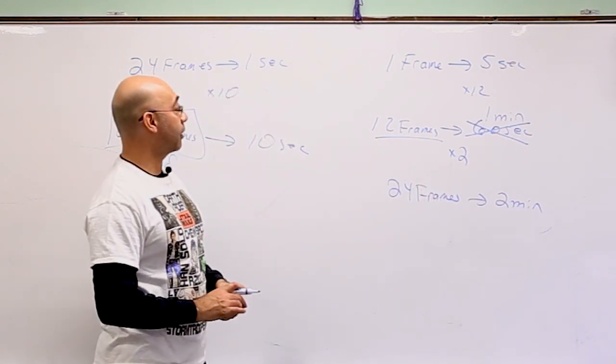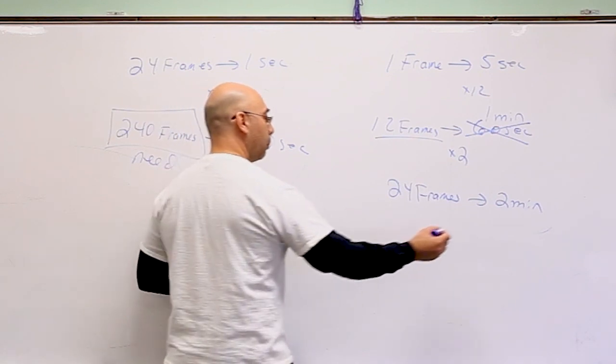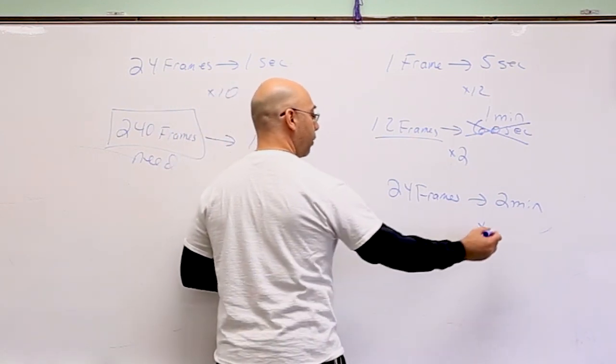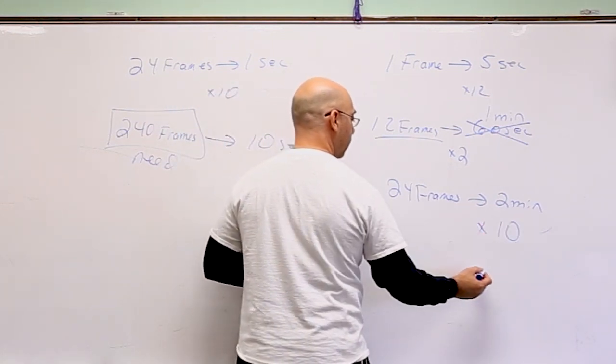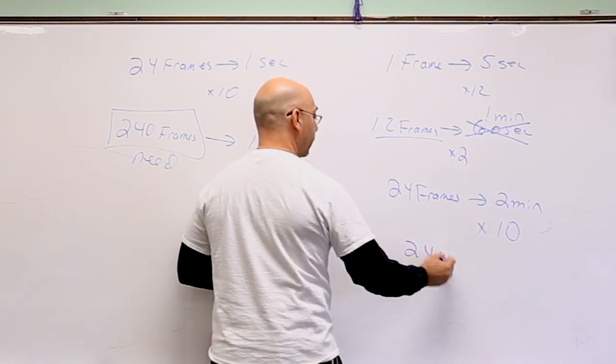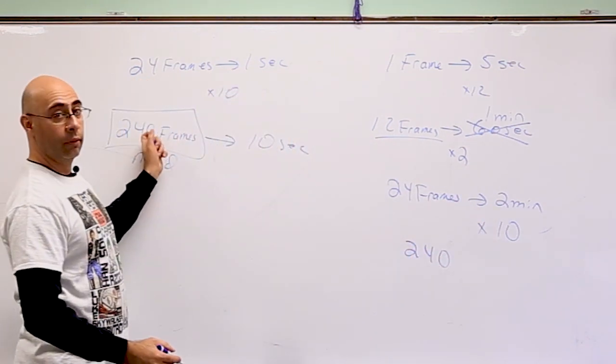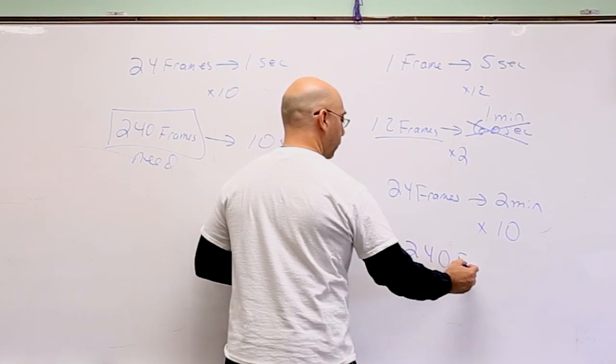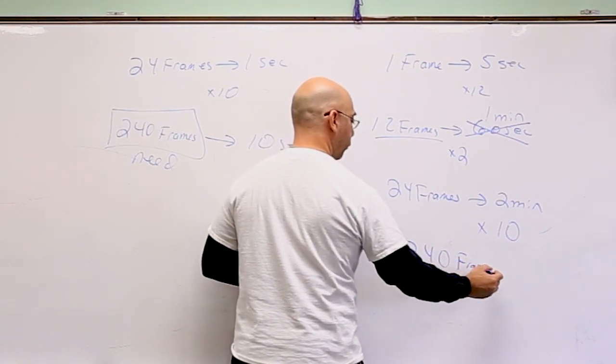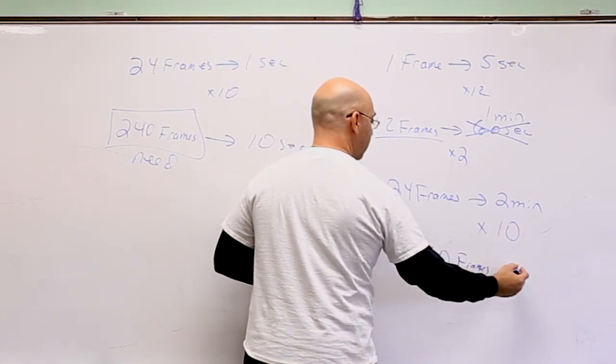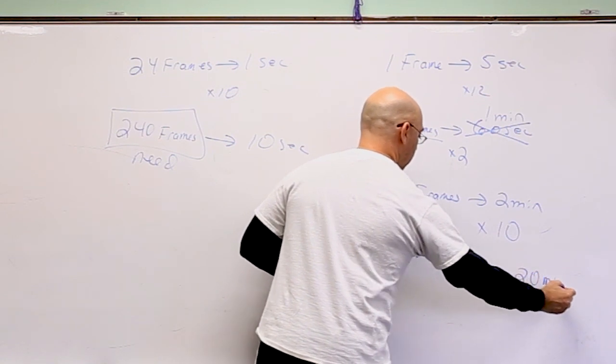I'll have one second worth of footage for every two minutes shot. Since I want to go 10 seconds of stuff, I'm going to multiply this times 10. So 24 times 10 is 240, because that's what I'm looking for. I'll put frames there, and 2 times 10, 20 minutes.